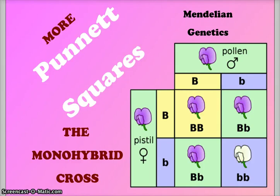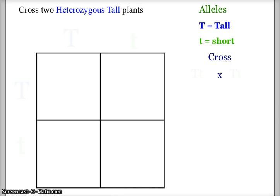Let's do some more Punnett squares — Mendelian genetics for the monohybrid cross using the Punnett square. We'll do our first example with two heterozygous tall plants. The first plant has the alleles in its heterozygous form: capital T and lowercase t, with capital T being the tall allele and lowercase t being the short allele.